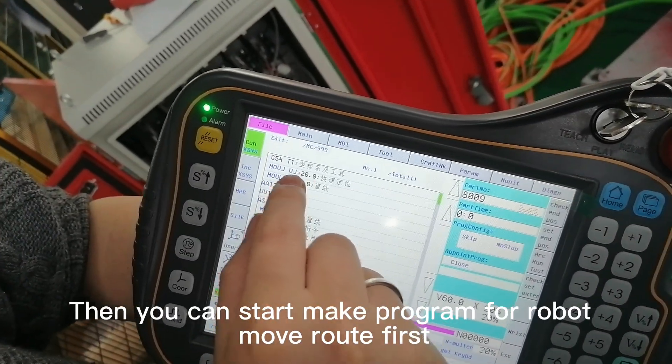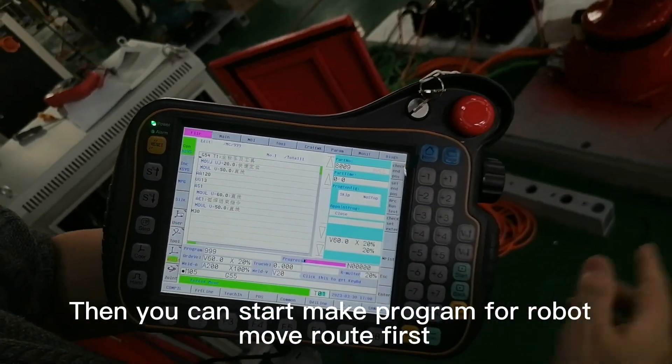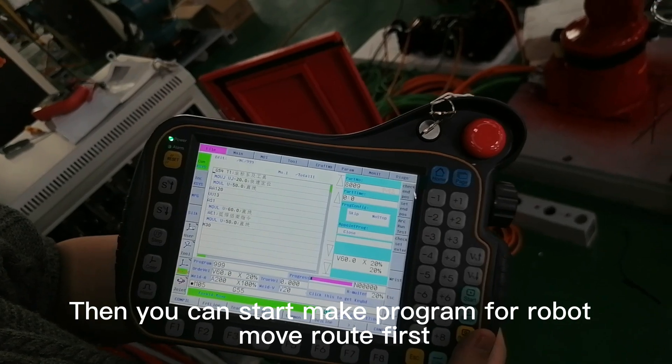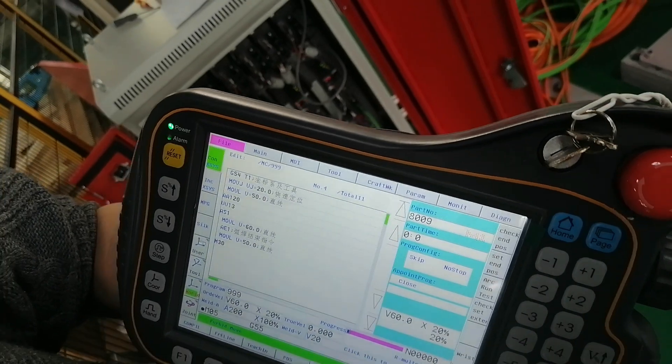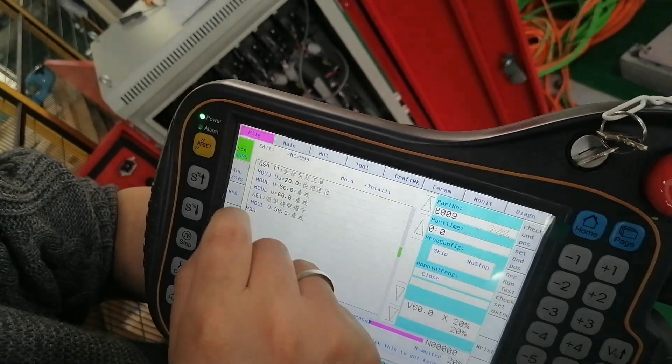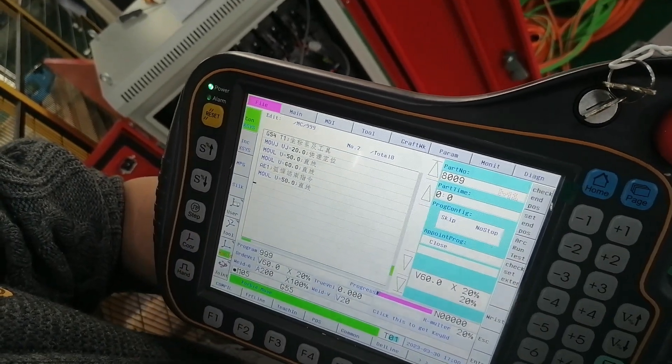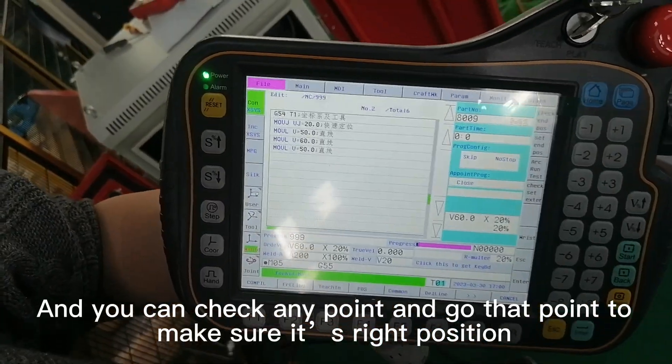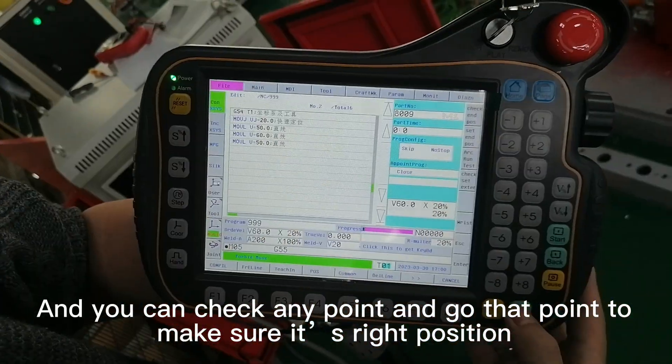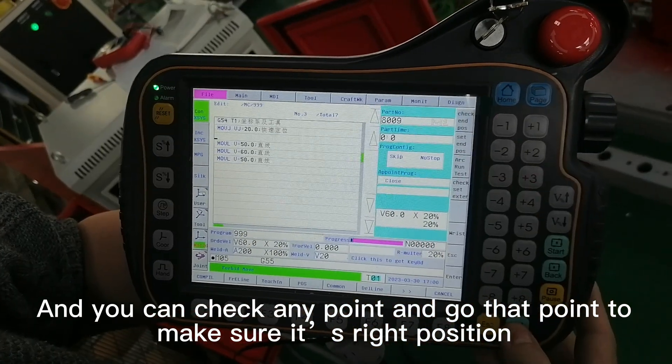Then you can start make program for robot. Move root first. And you can check any point and go that point too. Make sure it has right position.